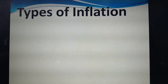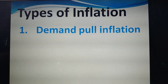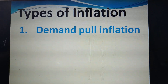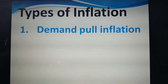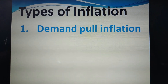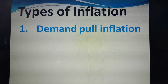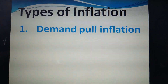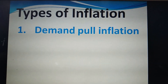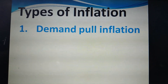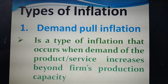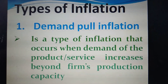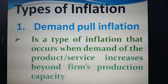There are three common types of inflation based on their causes. The first type is demand-pull inflation. Product demand usually increases due to a variety of causes, such as seasonal situations or the consumption rate of users. Demand-pull inflation is defined as a type of inflation which occurs when demand for a product or service increases beyond the firm's production capacity.